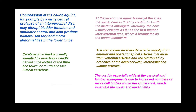Another important fact: the spinal cord starts at the upper border of the C1 vertebra (the atlas bone), directly continuous with the medulla oblongata through the foramen magnum. Inferiorly, the cord usually extends to the first lumbar intervertebral disc, terminating as the conus medullaris — typically at L1, sometimes L2. The arterial supply comes from the anterior and posterior spinal arteries arising from the vertebral arteries, reinforced by branches of the deep cervical, intercostal, and lumbar arteries.